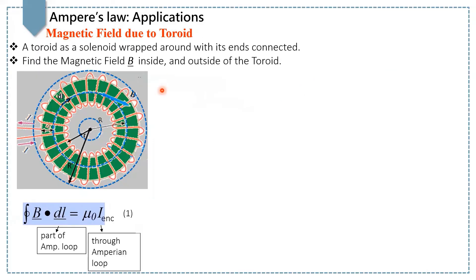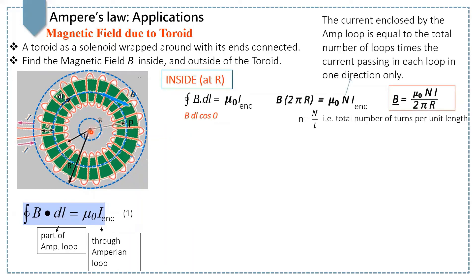In this lecture, we will discuss the magnetic field due to a toroid. A toroid is shaped like a solenoid but bent into a circular shape. It has n turns and current is passing through it. To find the magnetic field at point P at a distance R from the center, we apply Ampere's law: closed integral B dot dL equals mu naught I enclosed. By taking the Amperian loop passing through point P in circular form, this loop is along the magnetic field inside the toroid, meaning there is a 0° angle between the magnetic field and the loop.